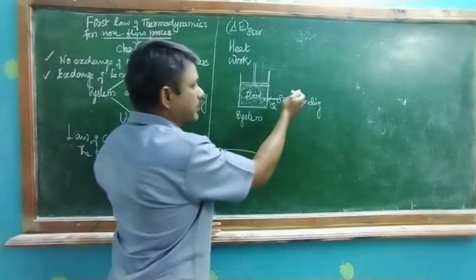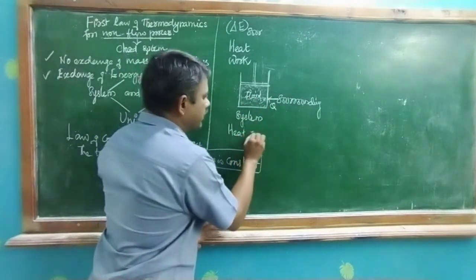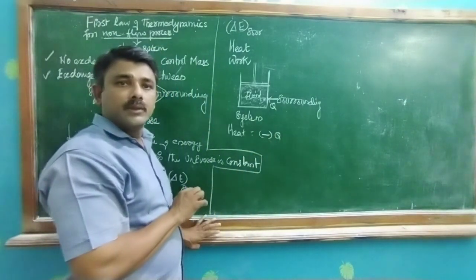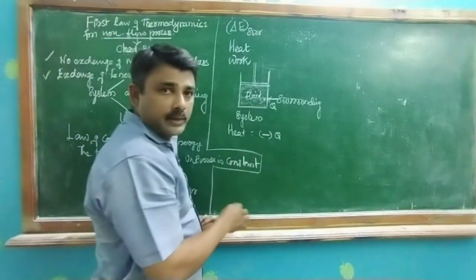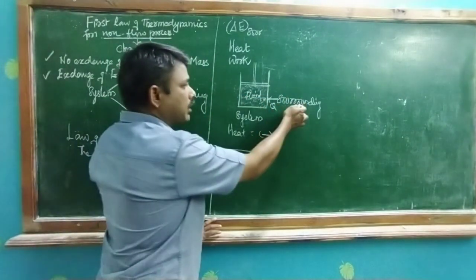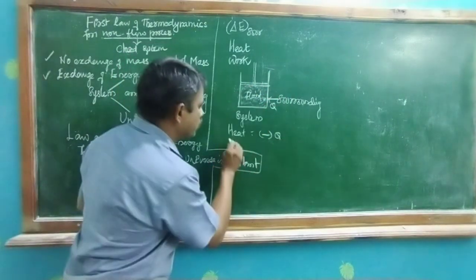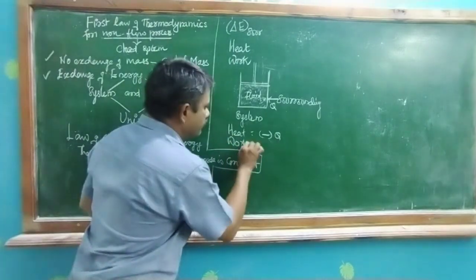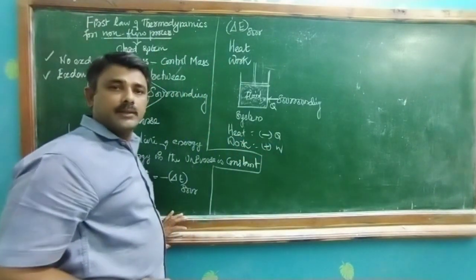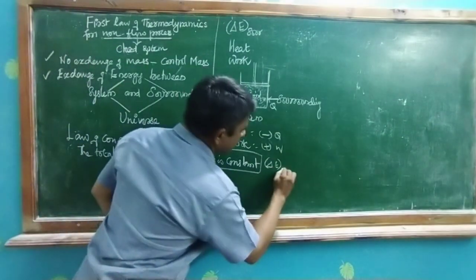Based on the surrounding, the heat transferred from the surrounding to the system is a negative quantity. Similarly, such an amount of work done by the surrounding on the system — based on the surrounding, work done by the surrounding on the system is a positive quantity. So, changes in total energy of the surrounding equals minus Q plus W.